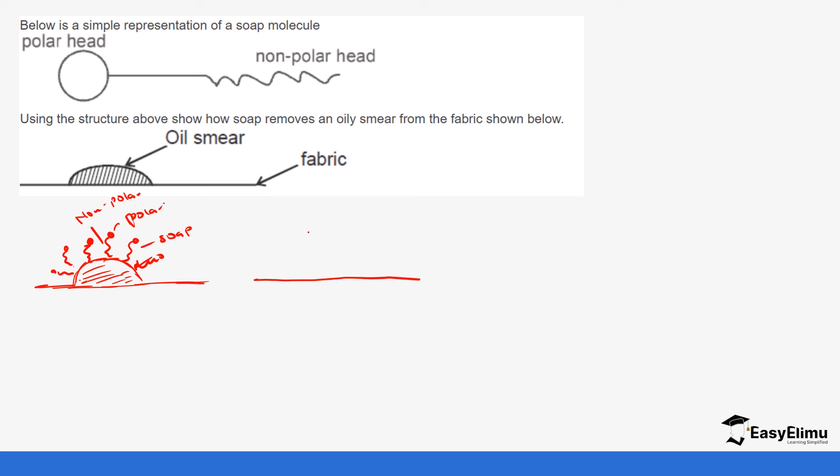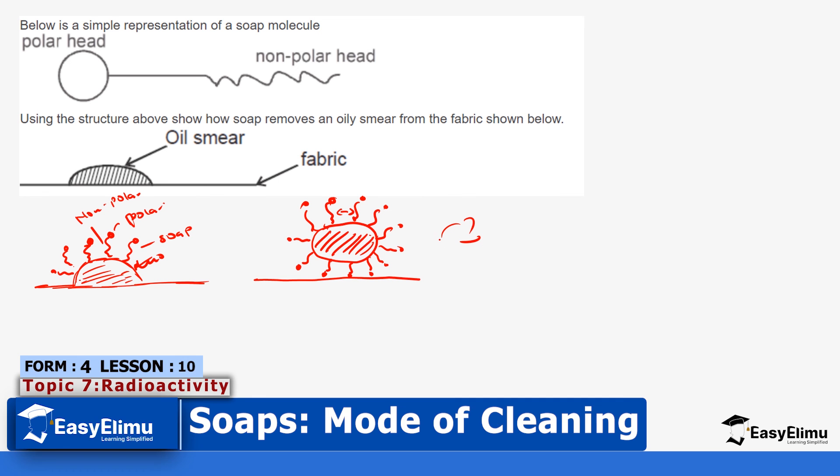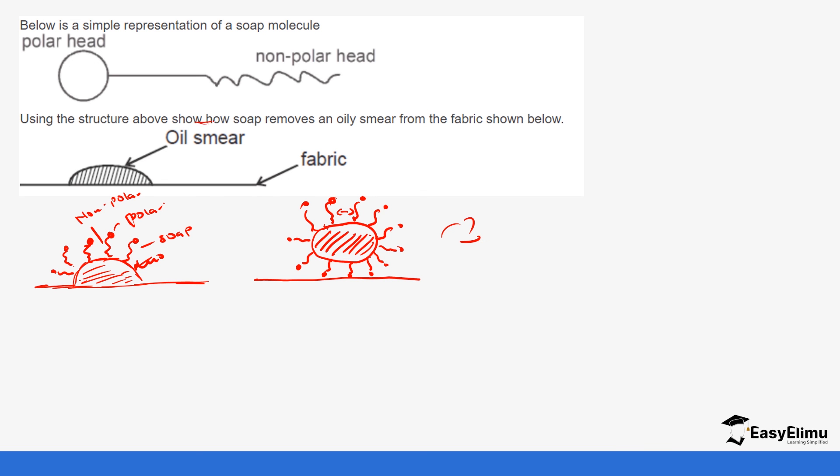Continuous agitation dislodges this oil from the fabric. We end up having the oil being surrounded by the non-polar ends. It concentrates or surrounds the oil, and it forms a micelle, as you can see. Remember we say they repel each other because of the negative polar end. It can't attract each other, so they are always repelling each other. This is the oil. Rinsing removes this micelle, and in the process, the clothes are washed well. This is how the cleaning action occurs. But in this case, you are just told to show, not to explain. You are supposed to use diagrams, but there are some cases where you can be told to explain the cleaning action of soap.